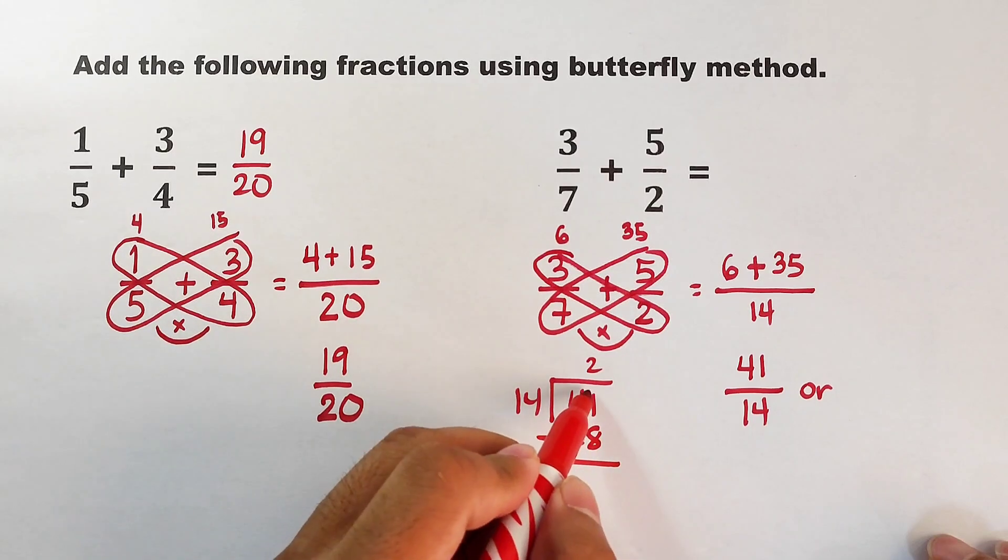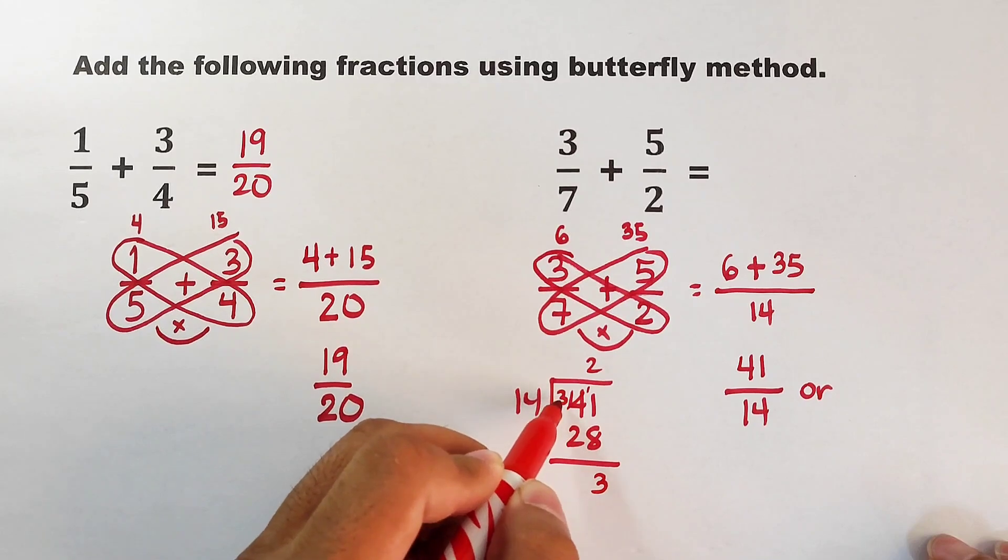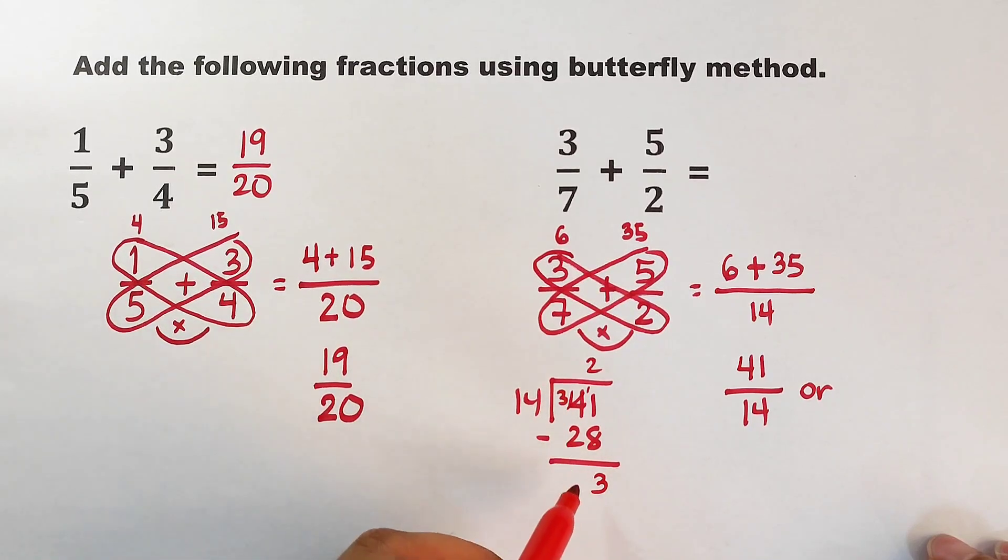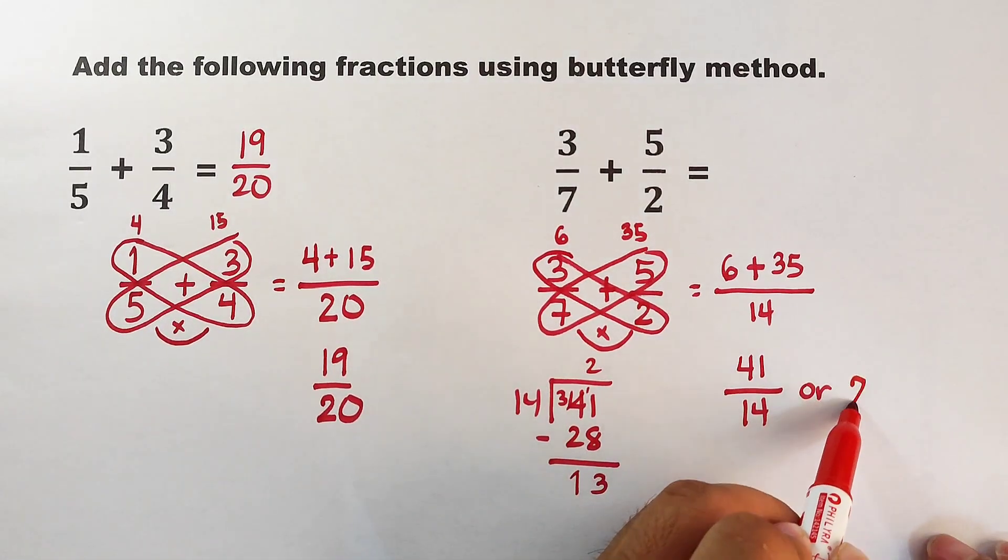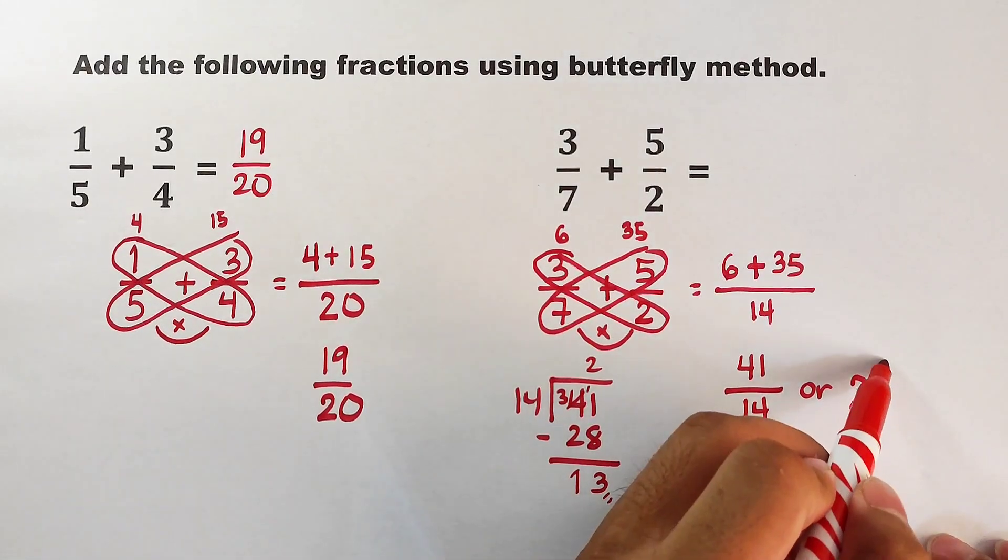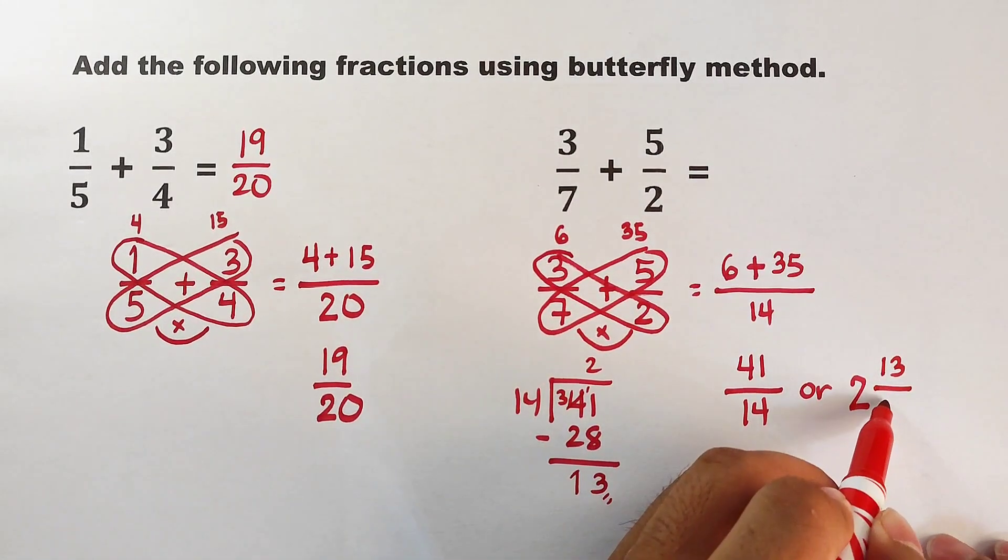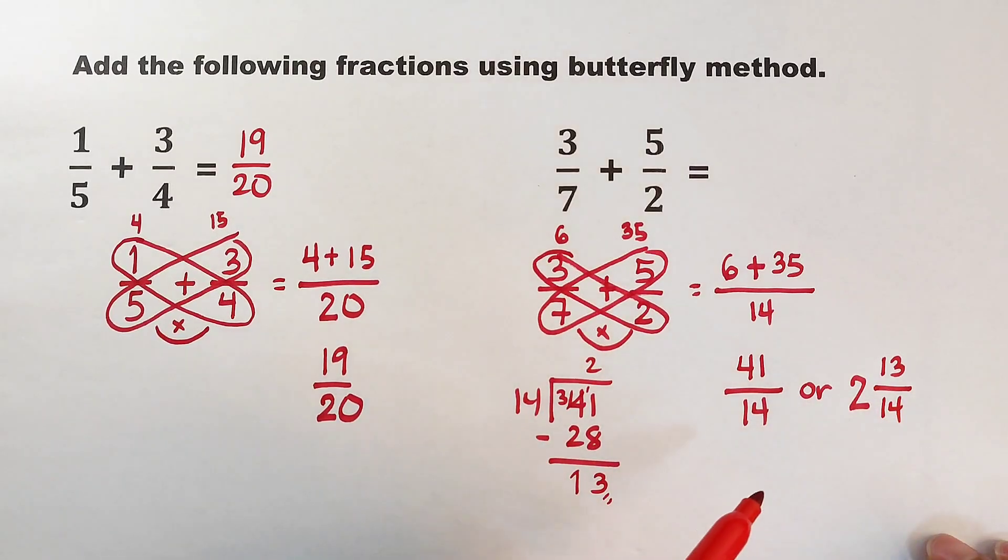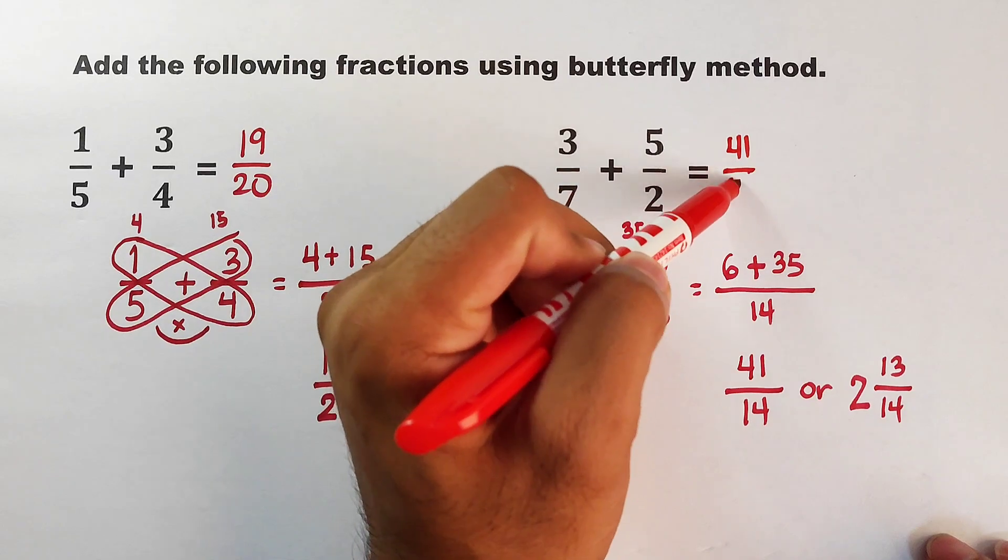2 times 14 which is equal to 28. And now subtracting, this is equal to 13, and then 3 minus 2 which is equal to 1. This quotient 2 will become the whole number. This remainder will become the numerator, over 14 which becomes the denominator. The answer is 41/14 or 2 and 13/14.